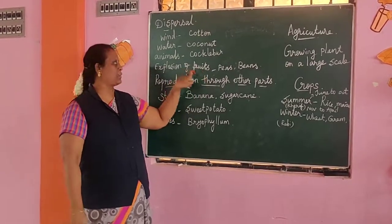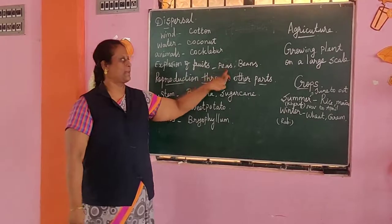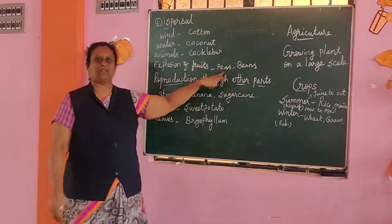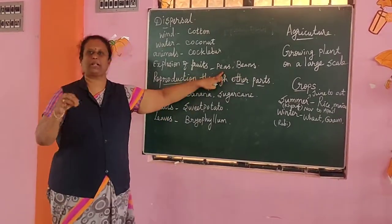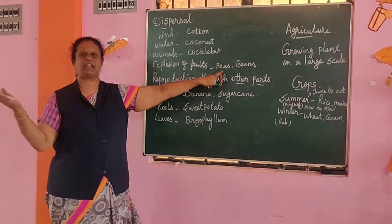For example, leaves and peas — these seeds are dispersed by the explosion of fruits.